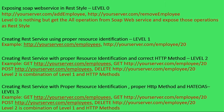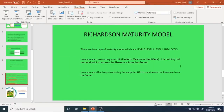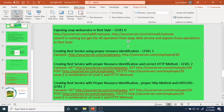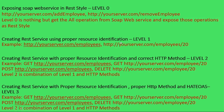The second one is Level 1. Level 1 is about creating a REST service using proper resource identification. Now you are thinking about a resource instead of an action. If you look at this example URL, yourserver.com/employees — you want to view all employees or delete all employees. Or yourserver.com/employees/20, where you are referring to a specific employee resource.